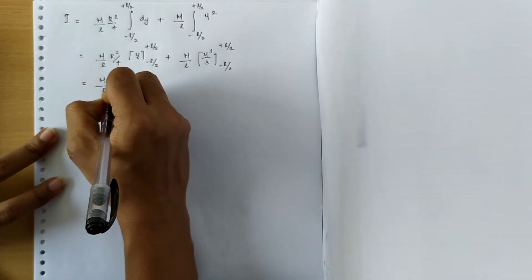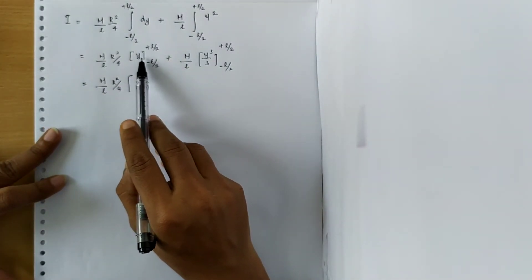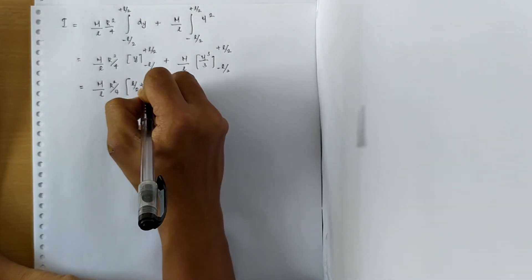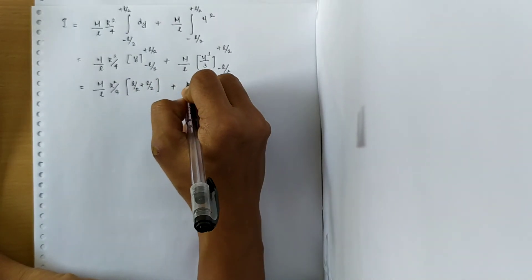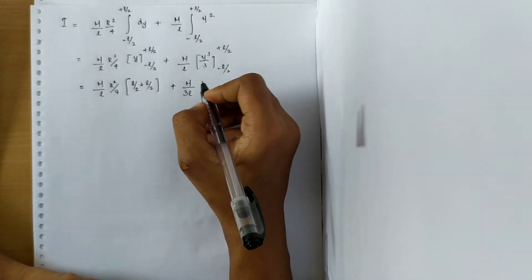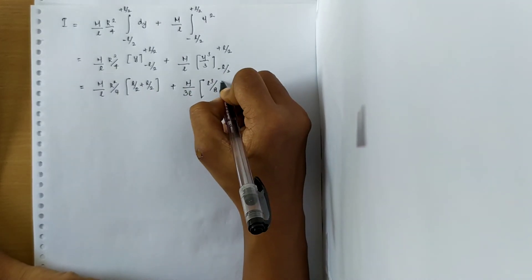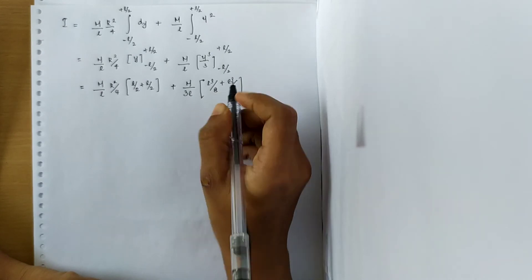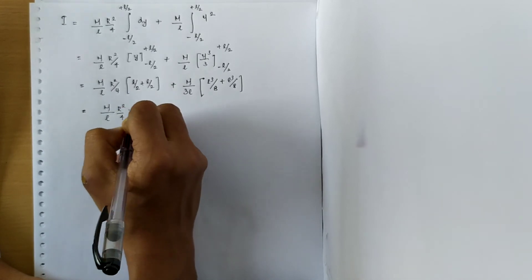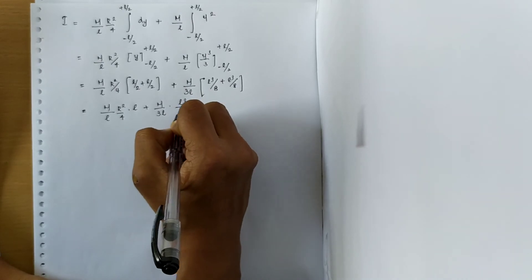Applying the integration limits: M/L · R²/4 gives L/2 − (−L/2) = L. For the second term, M/(3L) times y³ evaluated gives L³/8 − (−L³/8) = 2L³/8 = L³/4. So this equals M/L · R²/4 · L + M/(3L) · L³/4.